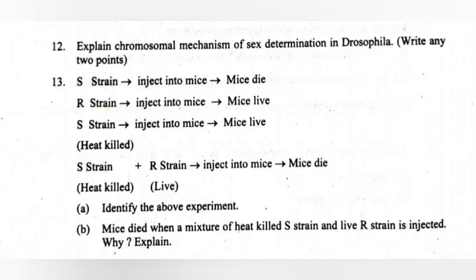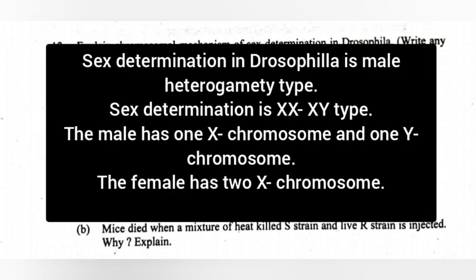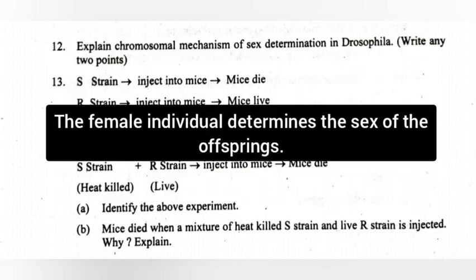12. Explain the chromosomal mechanism of sex determination in Drosophila. Write any two points. Answer: Sex determination in Drosophila is male heterogametic type (XX-XY type). The male has one X chromosome and one Y chromosome. The female has two X chromosomes. Thus, the female individual determines the sex of the offspring.